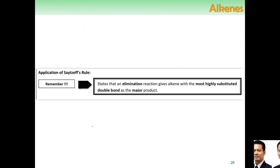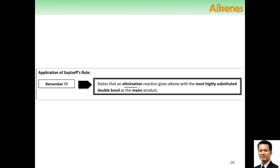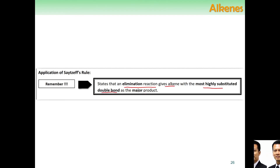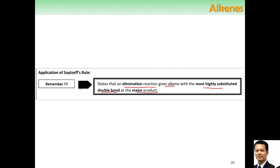Always remember Zaitsev's rule: elimination reaction, which is dehydration of alcohol, gives the alkene with the most highly substituted double bond — the highly substituted alkene — as the major product. That is it for today. I hope you try to digest this information, and as always, good luck.